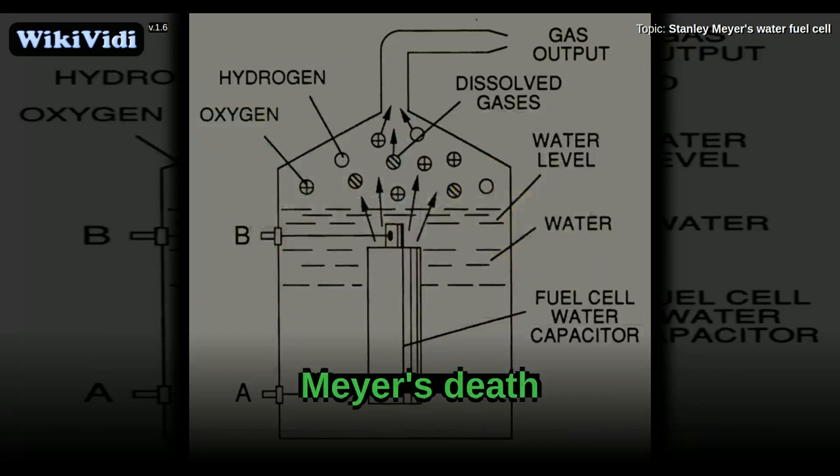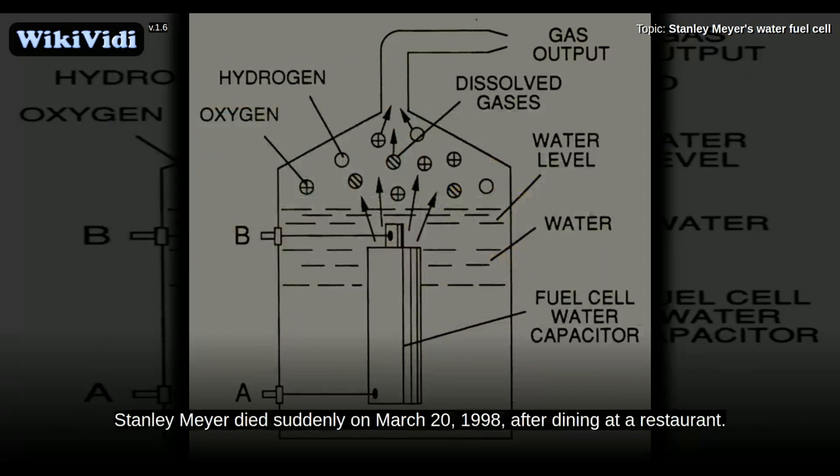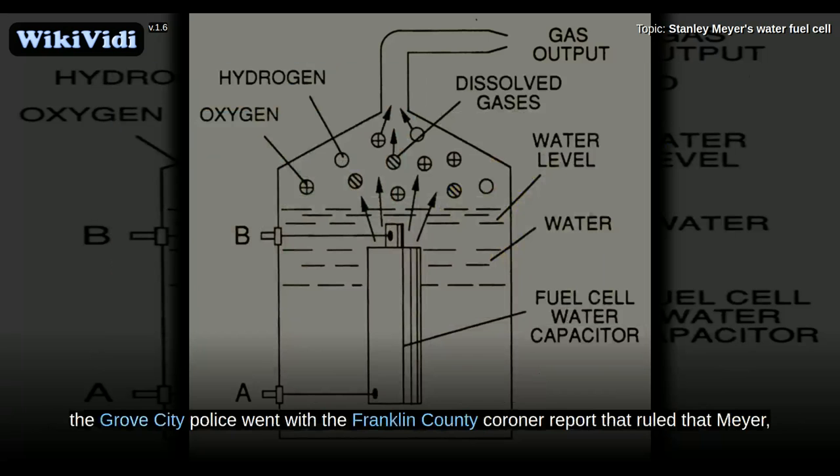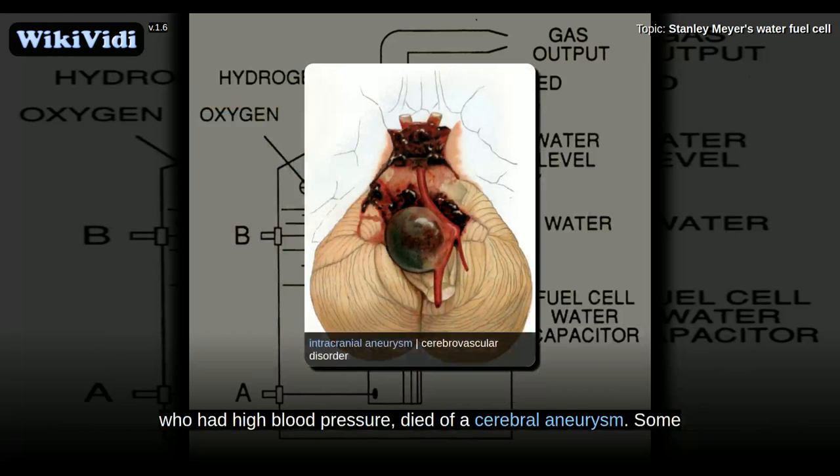Meyer's death. Stanley Meyer died suddenly on March 20, 1998, after dining at a restaurant. His brother claimed that during a meeting with two Belgian investors in a restaurant, Meyer suddenly ran outside saying they poisoned me. After an investigation, the Grove City Police went with the Franklin County coroner report that ruled that Meyer, who had high blood pressure, died of a cerebral aneurysm. Some of Meyer's supporters believe that he was assassinated to suppress his inventions.